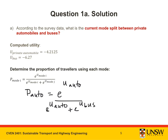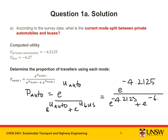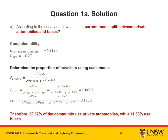Substituting in the utility values we calculated earlier, we get a proportion of 0.8867. Repeating the process, we can also find the proportion of travelers who would take the bus, which gives a value of 0.1133. An alternative way to arrive at this answer is to calculate 1 minus the proportion of travelers who would use private automobiles, since there are only two modes in this question — the proportion taking automobiles plus the proportion taking buses equals 1.